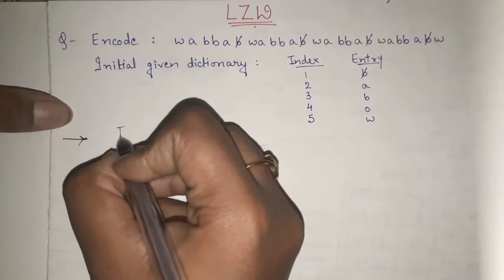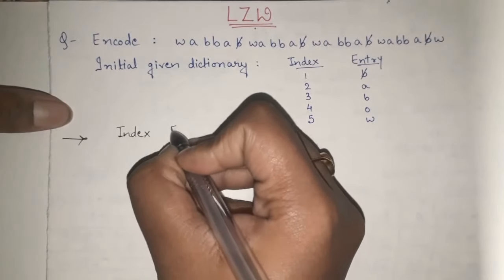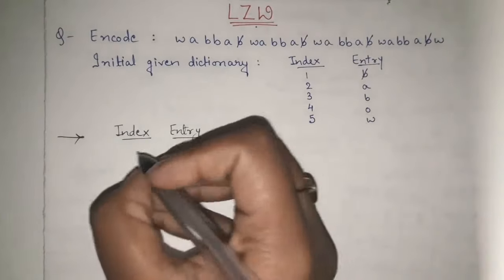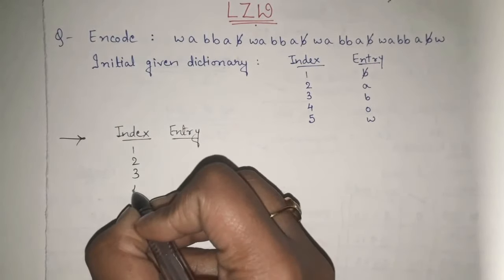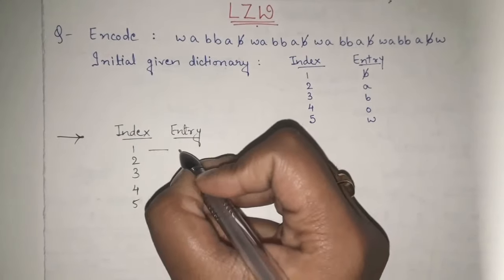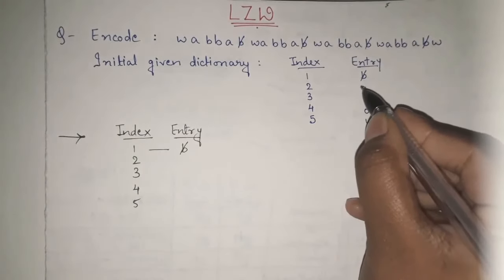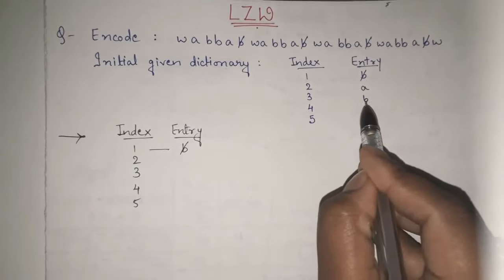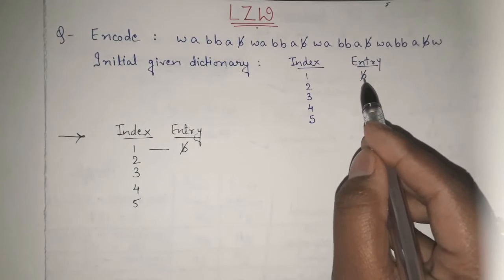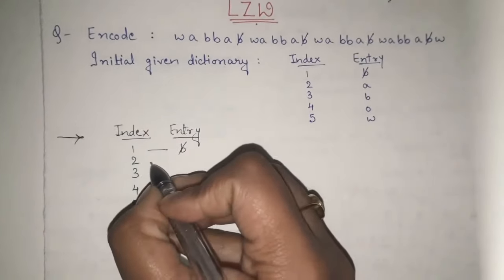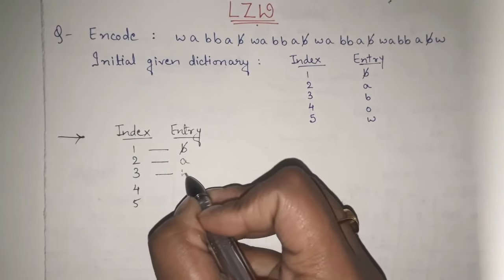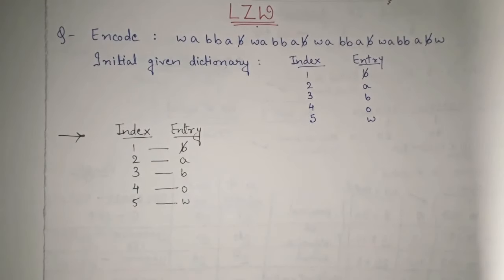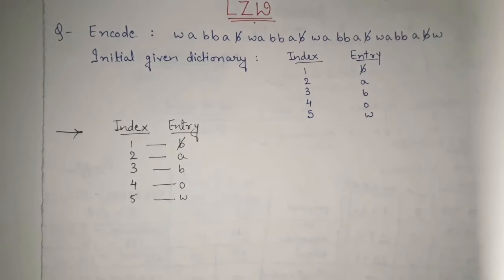We will again start with the index and entry. First of all, four entries are given to us and we will write them as they are since they are our initial entries. These are index 1, 2, 3, 4, 5. The entries are: B blank — also known as B space or B blank — then A, B, O, and W. This is the dictionary given to us and we will now keep on updating the dictionary as per the sequence characters.